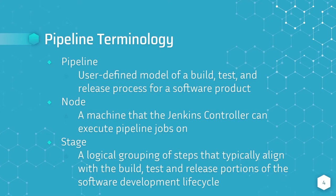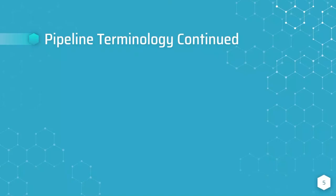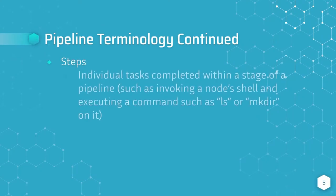For instance, you might have a build stage, a test stage, and a deploy stage. Steps are individual tasks completed within a stage of a pipeline. For instance, a single step could invoke a Jenkins node's shell and execute a command like ls or make directory on it.